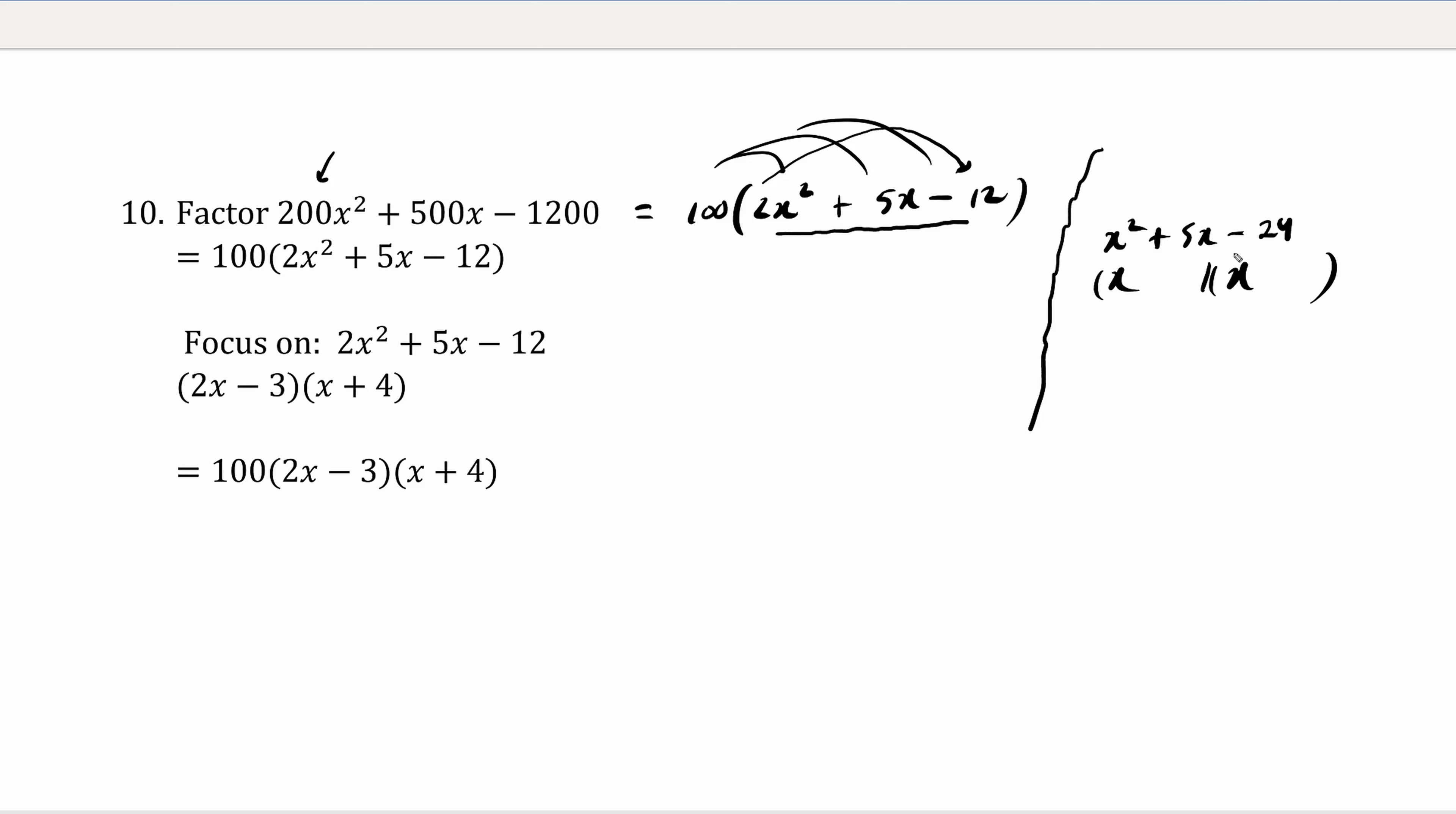We factor normally, what times what is 24? Let's try 8 and 3, positive and negative. Indeed, these multiply to be negative 24, and the difference is 5.